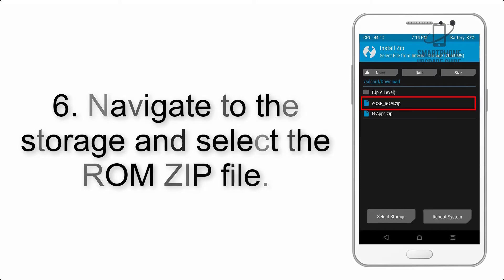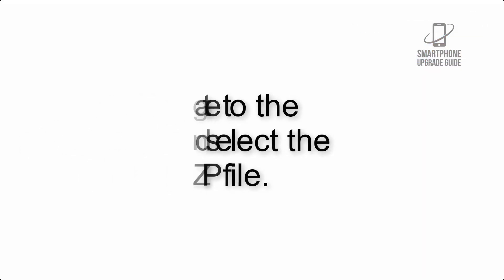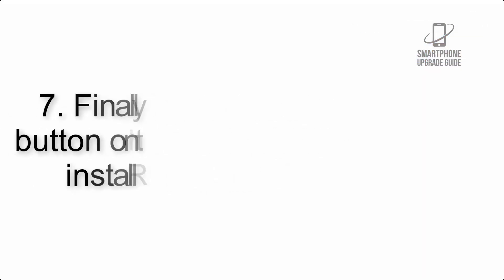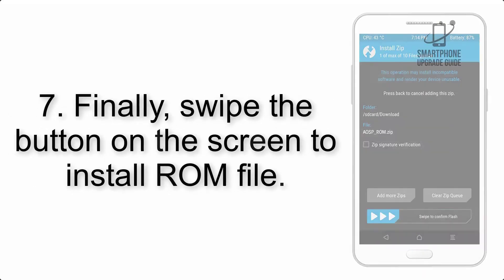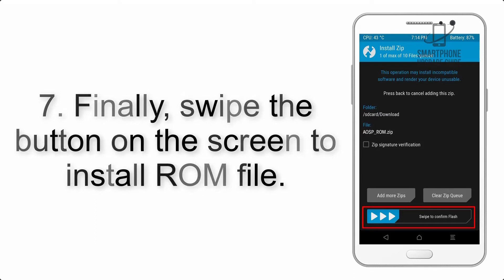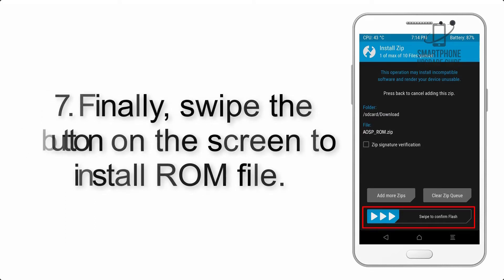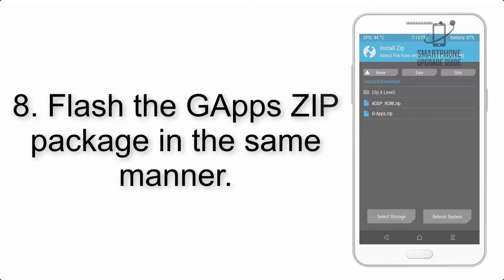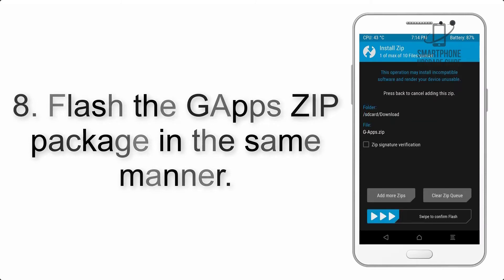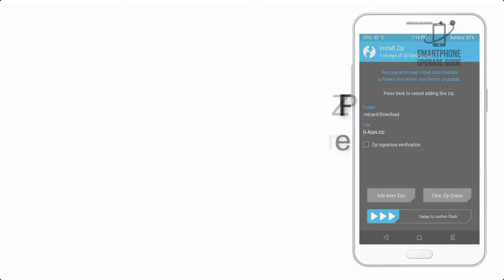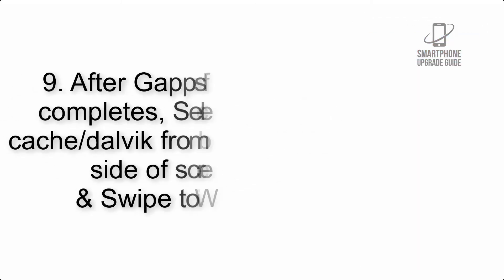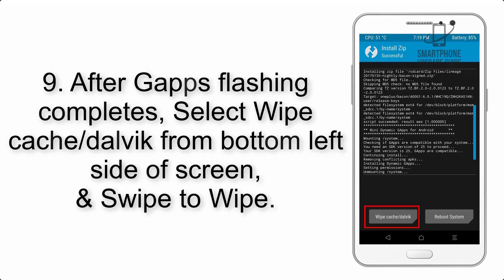Step 6: Navigate to the storage and select the ROM zip file. Step 7: Swipe the button on the screen to install the ROM file. Step 8: Flash the GApps zip package in the same manner.